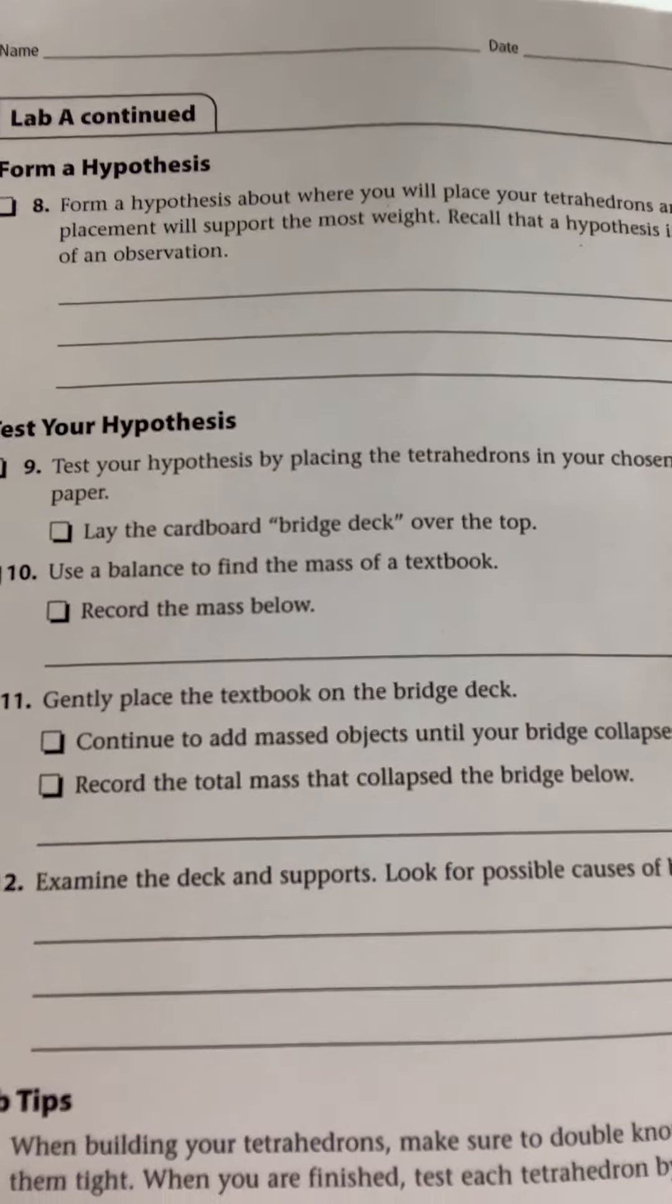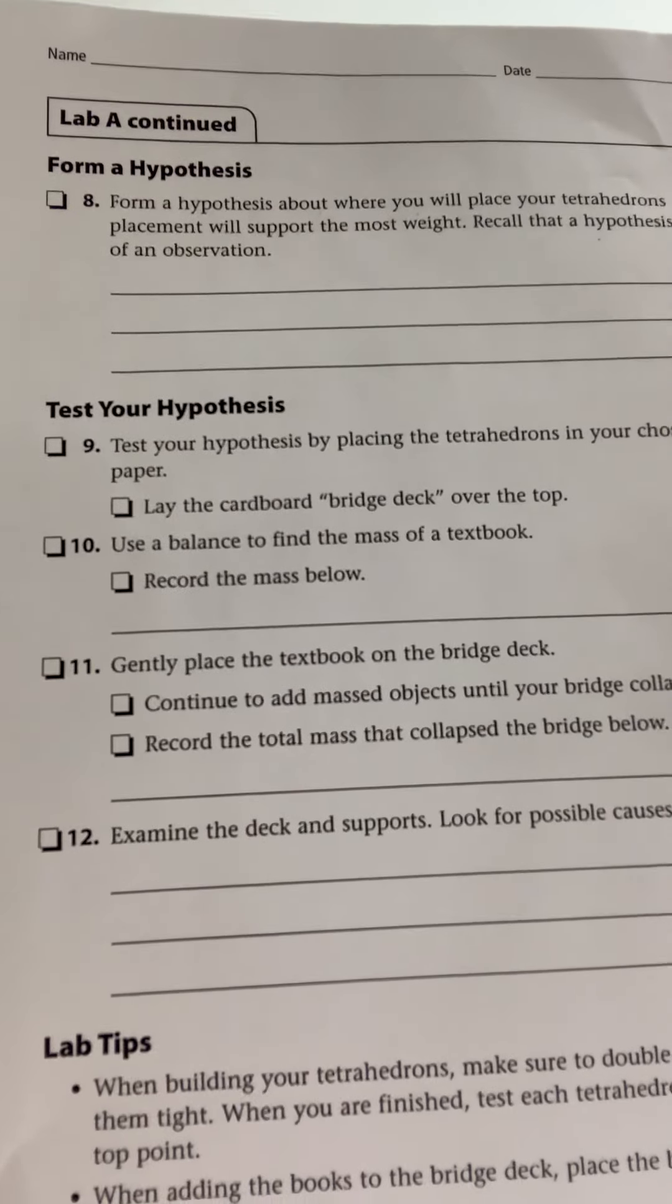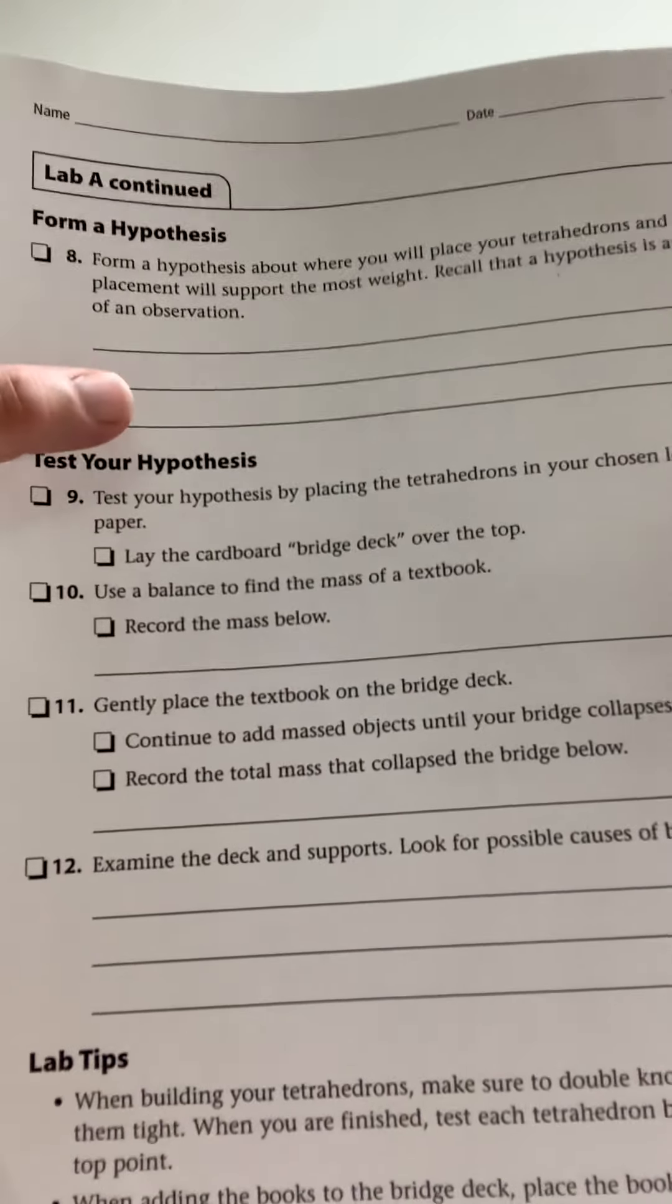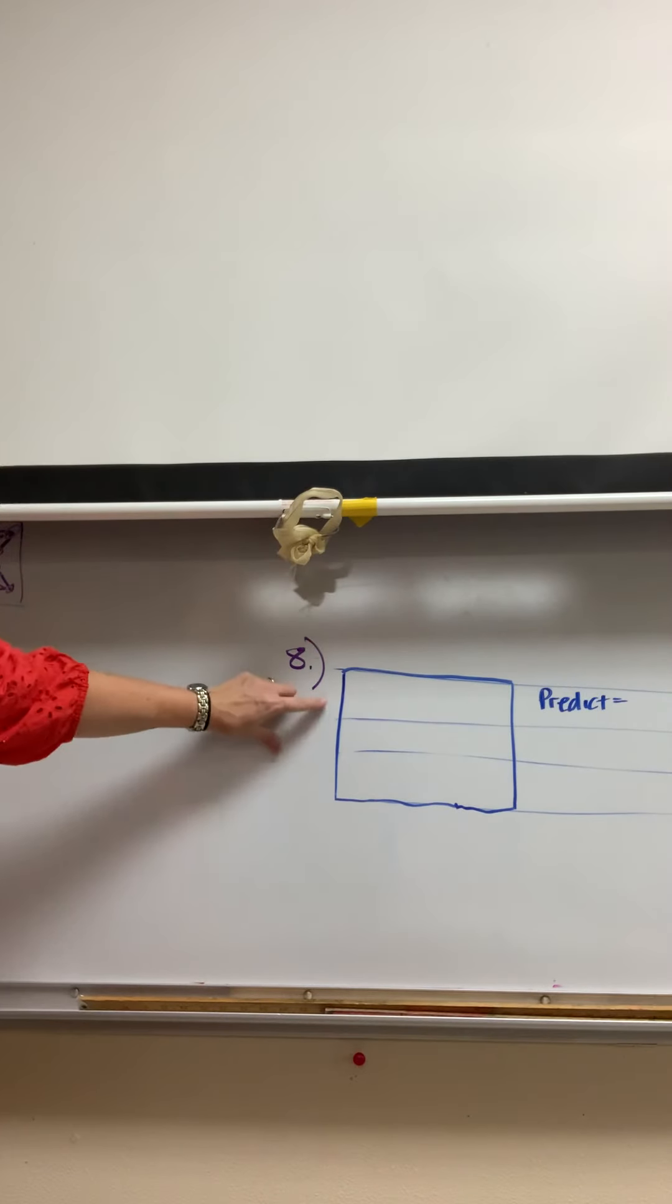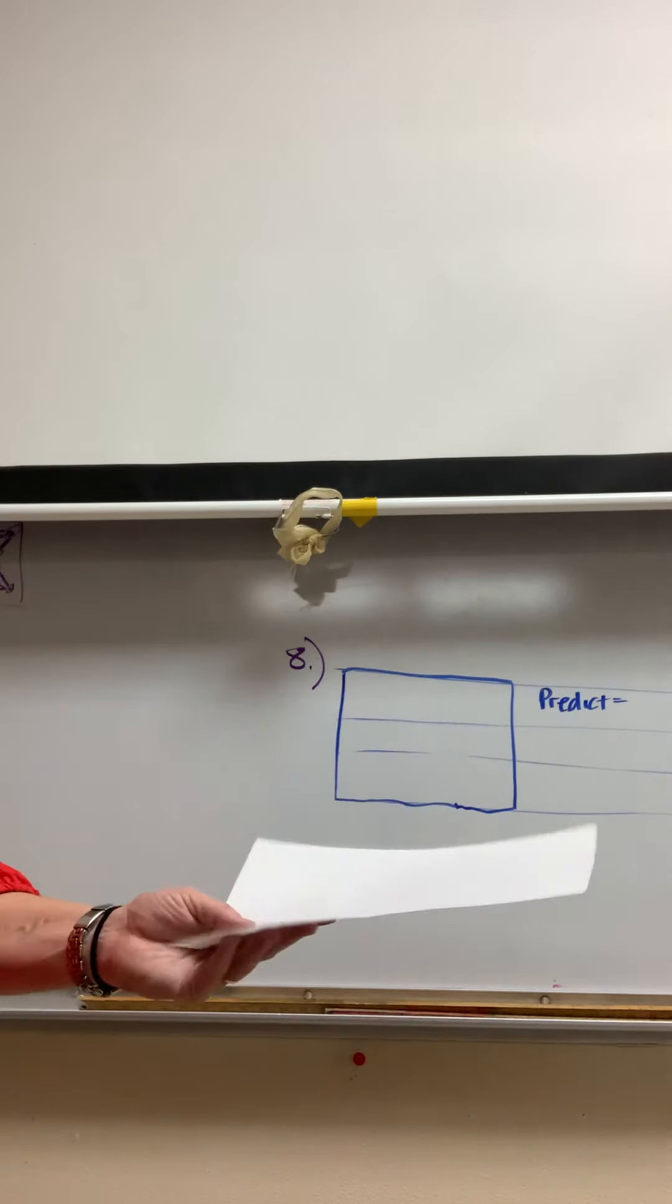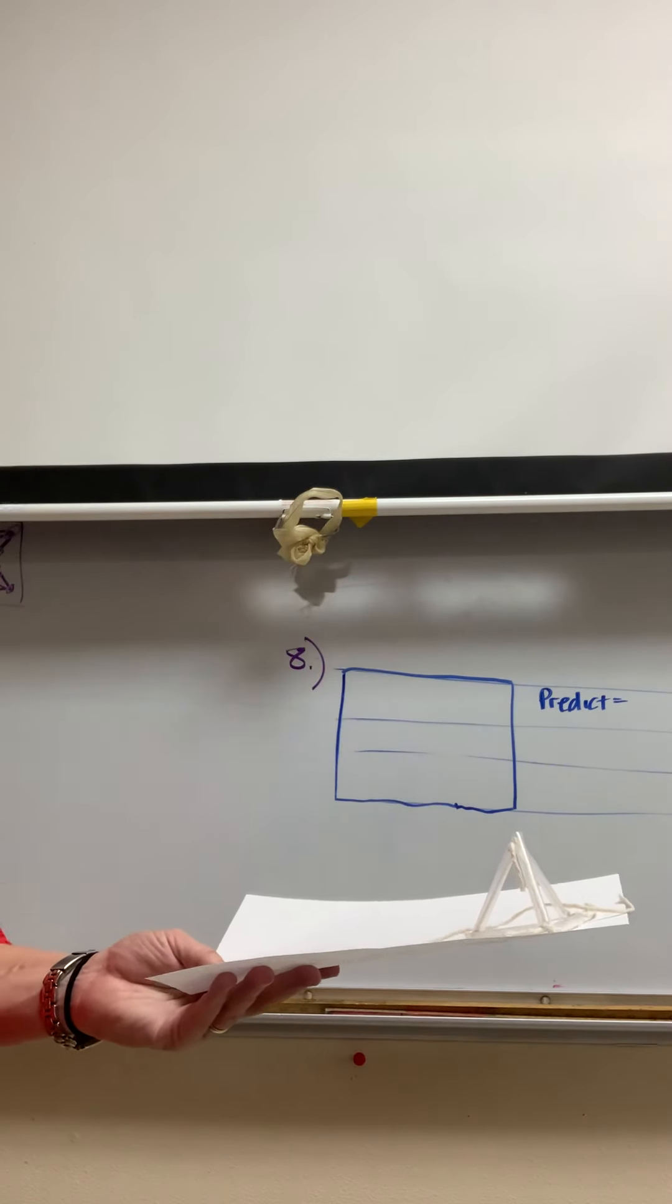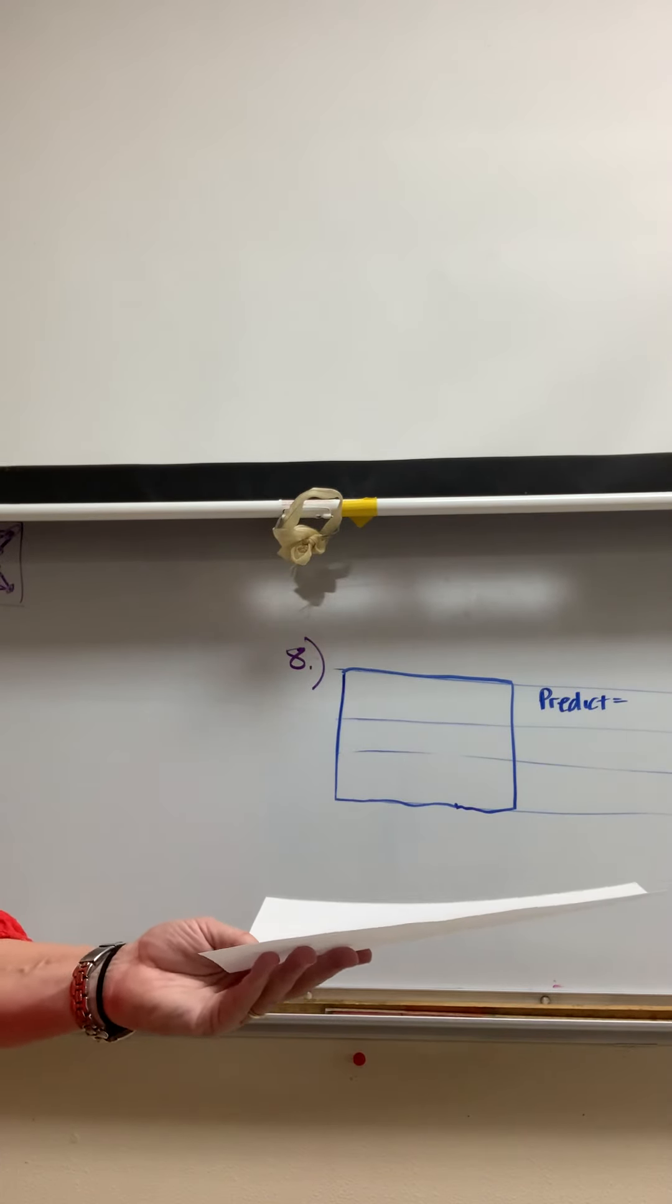I'm going to show this to you on the board as if this were what you're drawing right here in this section. You have this number eight, and you're going to, on a blank sheet of paper, be setting tetrahedrons where you would like to place them. They can be anywhere on here; you just have to decide that's your hypothesis.